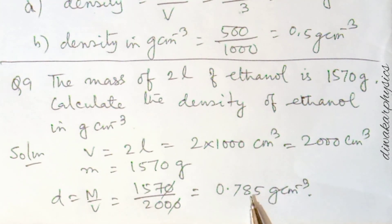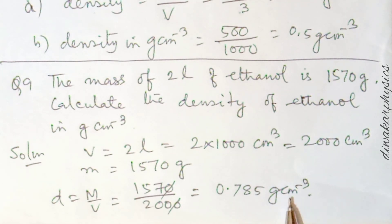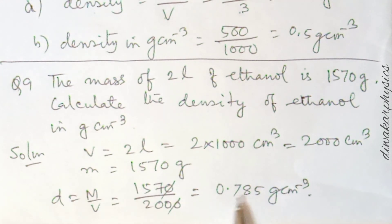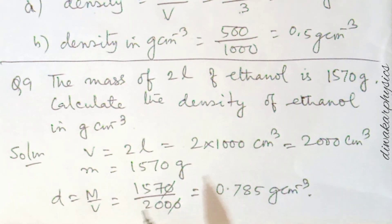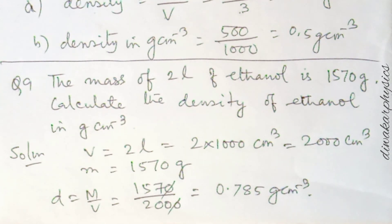If you need this density in kg per meter cube, multiply by 1000. That is how you solve these numericals. Thank you for watching.